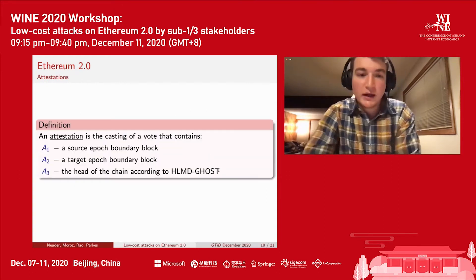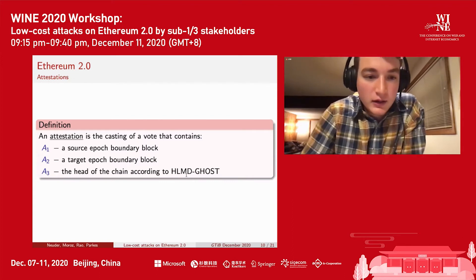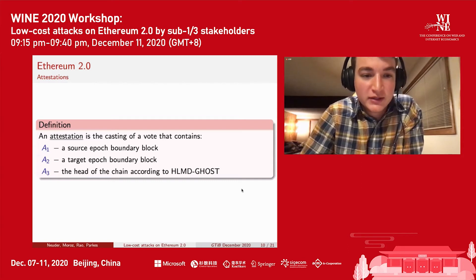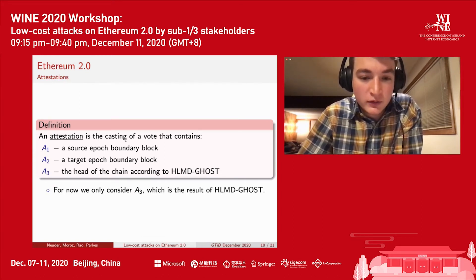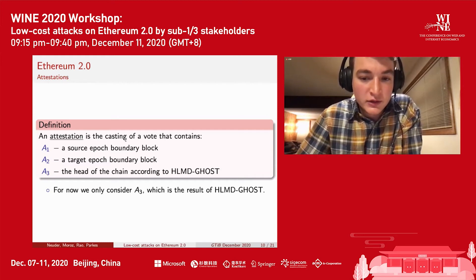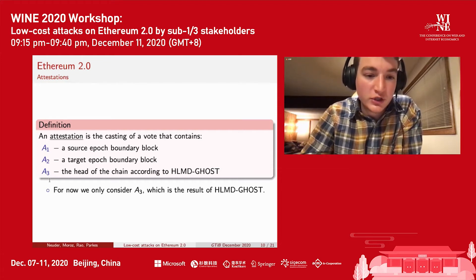An attestation is a vote containing three pieces of information: a source epoch boundary block, a target epoch boundary block, and the head of the chain according to HLMD Ghost. For our discussion, we only need to consider A3, which is the result of running HLMD Ghost. Honest validators will run the fork choice algorithm to determine which block to sign at A3.